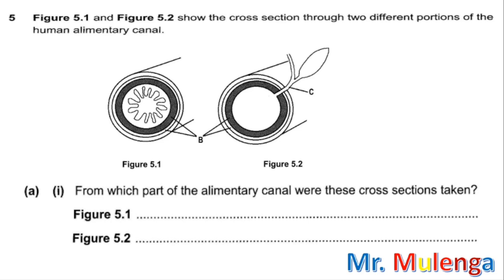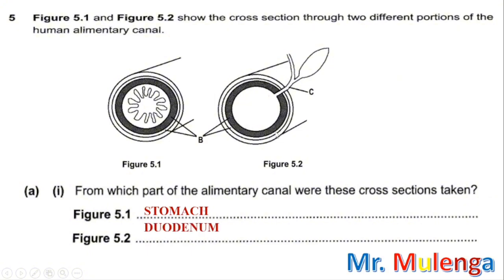Here is question 5A1. The question reads: Figure 5.1 and Figure 5.2 show the cross-section through two different portions of the human alimentary canal. Both figures are labeled B and C. Part A1 asks: from which part of the alimentary canal were these cross-sections taken? Figure 5.1 was taken from the stomach, while Figure 5.2 was taken from the duodenum. So we have answered question A1.